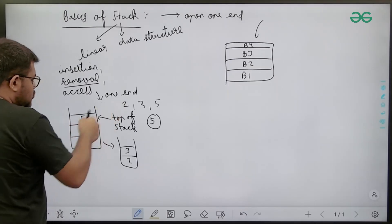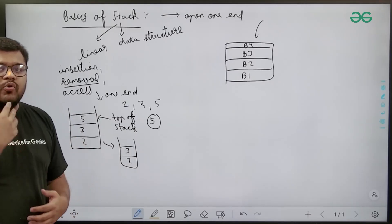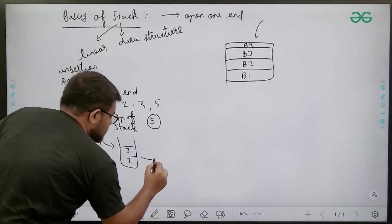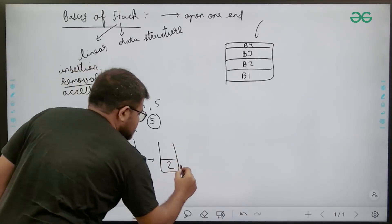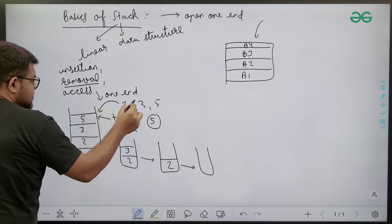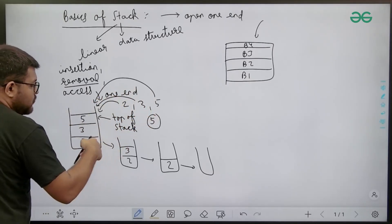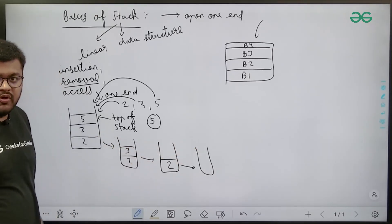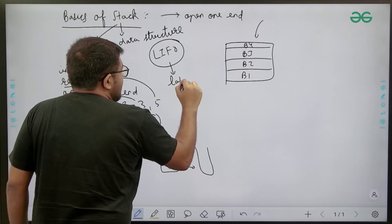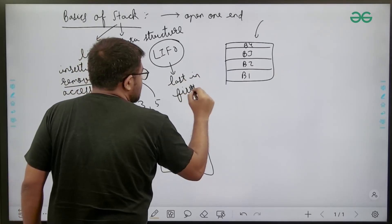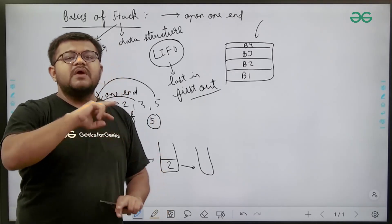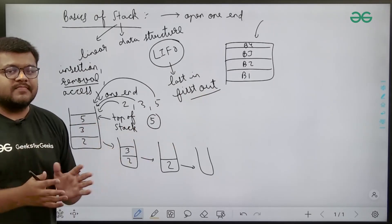Suppose I inserted two, then I inserted three, then I inserted five. Now I ask you to remove one element — five will be removed. Then remove another — three will be removed. Then remove another — two will be removed and the stack becomes empty. In insertion, two was inserted first, then three, then five. While removal, five was removed first, then three, then two. So this follows the principle of LIFO — Last In First Out. Whichever element is inserted last will be removed first.